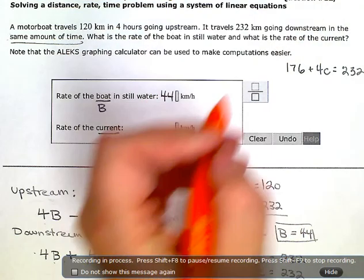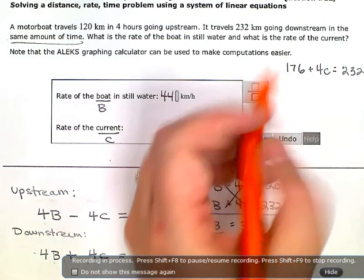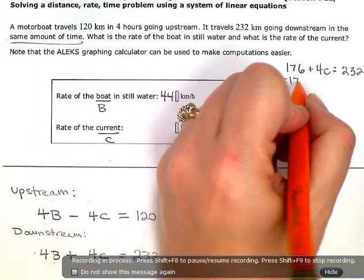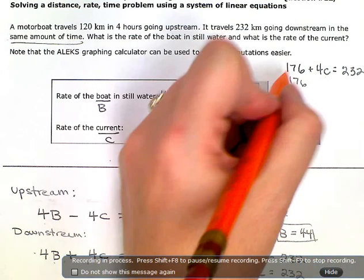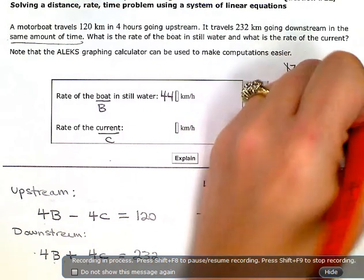So to get the C by itself, before I deal with the coefficient, the one attached directly to the variable, I want to get rid of any other numbers that are over there on that side. So I need to zero out that one and then balance by doing the same thing on the other side.